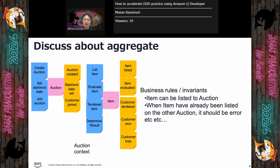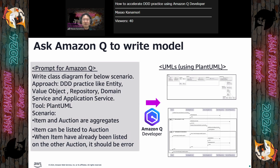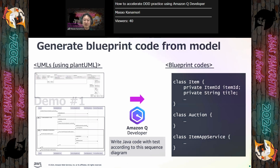Let's start working with Amazon Q Developer. You can use natural sentences to create a prompt to generate a model. This is an example prompt to create a class diagram representing the auction domain model. Amazon Q can generate PlantUML DSL. To have Amazon Q use DDD practices, it is a good approach to list the practice names in your prompts — Amazon Q will then use those practices in the UMLs. When you get a good class diagram, you can also let Amazon Q generate a sequence diagram for those scenarios. When you are satisfied with those UMLs, you can ask Amazon Q to generate source code. I recommend generating source code with test code. This code should be a good starting point for coding with DDD practices.